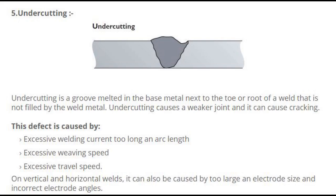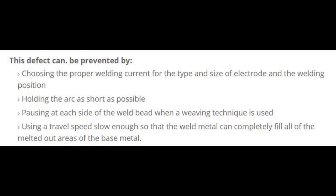Number 5: Undercutting. Undercutting is a groove melted in the base metal next to the toe or root of a weld that is not filled by the weld metal. Undercutting causes a weaker joint and it can cause cracking. This defect is caused by: excessive welding current, too long an arc length, excessive weaving speed, excessive travel speed, and on vertical and horizontal welds it can also be caused by too large an electrode size and incorrect electrode angles.